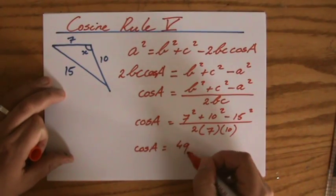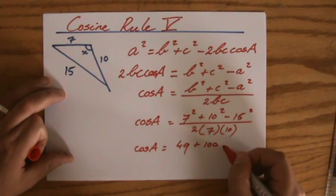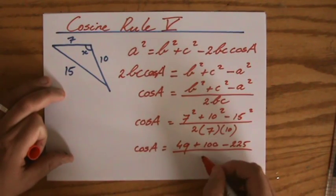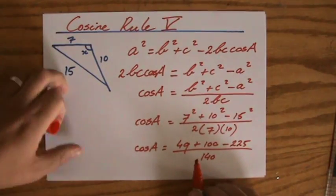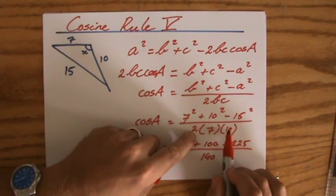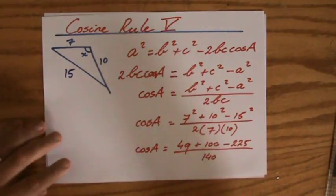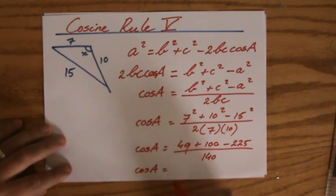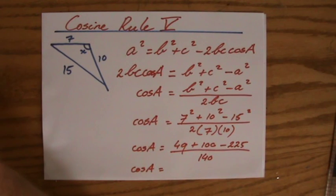This is 49, add 100, take away 225. And all of that divided by 140. 14 times 10, you add the 0 there if you like. So the cosine of A equals. Now, perhaps you want to get your calculator out. Although, still, it's not really necessary.